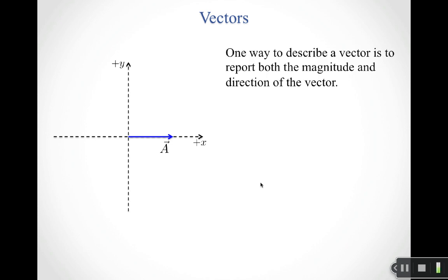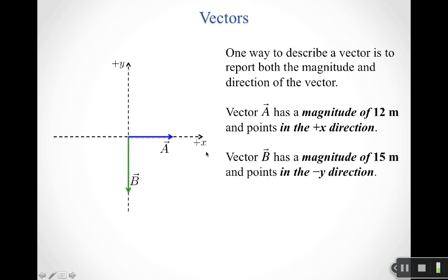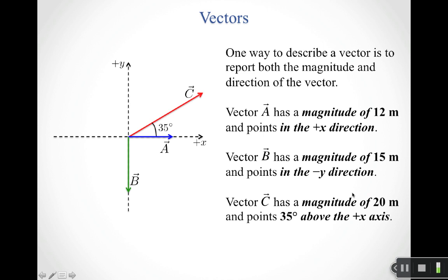When I think about vector A here, one thing I'd like to be able to do is to describe it. One way to describe a vector is to report its magnitude and direction. I might tell you that vector A has a magnitude of 12 meters and happens to point in the positive x direction. Vector B has a magnitude of 15 meters. It's a little bit longer than vector A and it points in the negative y direction.